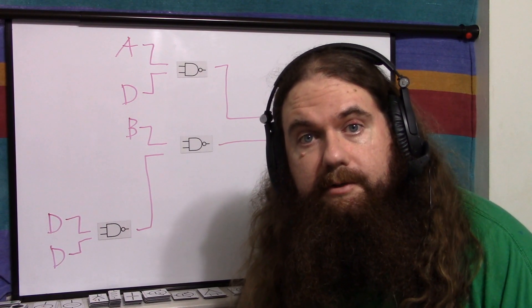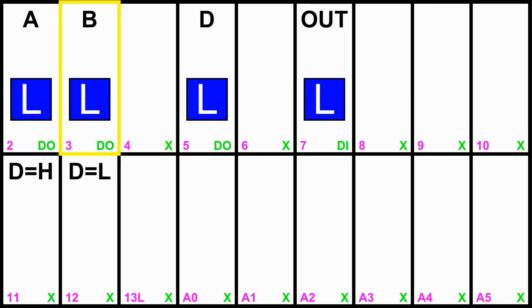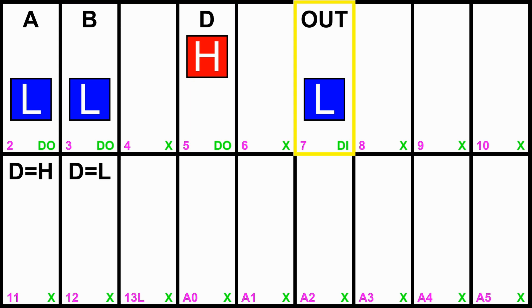So now let me show you with a real chip so you know I'm not just fooling you. So I've just got the NAND chip hooked up to a breadboard and hooked up to my Arduino. And I've got A and B set up as the input signals. D as the direction to select the signal. So we'll set it to high. And here's out.